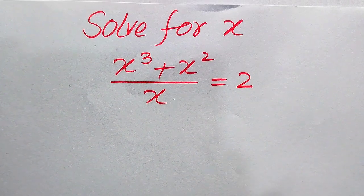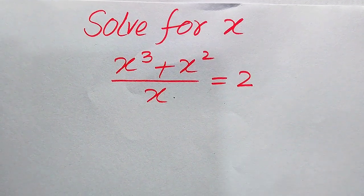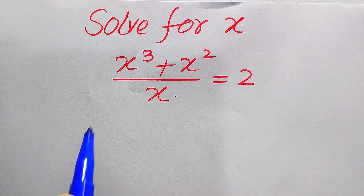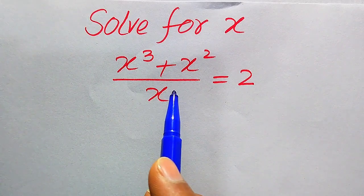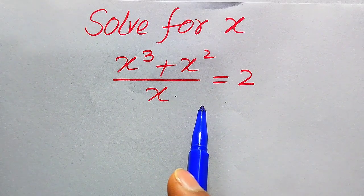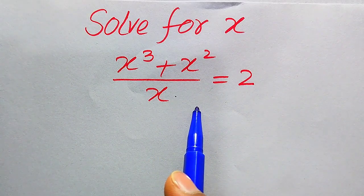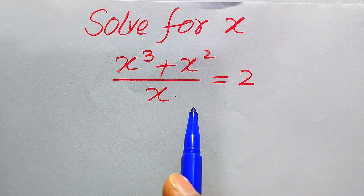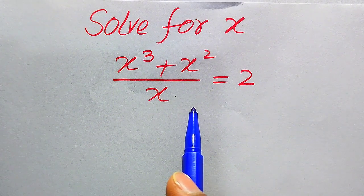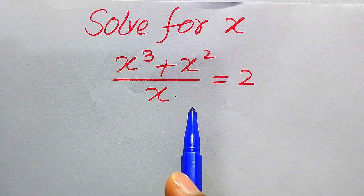Hello everyone, welcome. We will solve this nice math olympiad algebra problem. Here we have (x³ + x²) divided by x equals 2, and we solve this problem for all the values of x. First we need to find all the roots of the equation, and at the last we will verify which of the roots are solutions and which are extraneous roots.